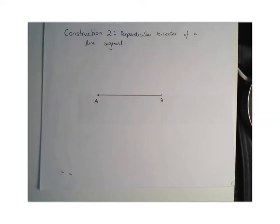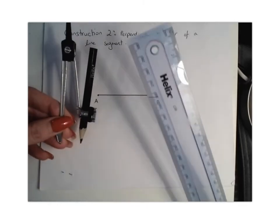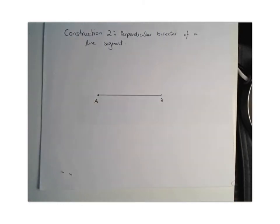To complete construction number two, we're going to need our compass and our straight edge. What we want to do is look at how to find the perpendicular bisector of a line segment.